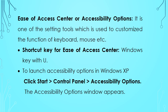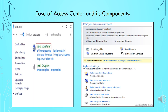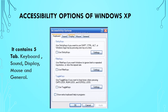To launch Accessibility Options in Windows XP: click Start, click on Control Panel, click on Accessibility Options. This is the Ease of Access Center and its components. It displays various options to make your computer easier to use.